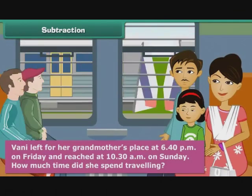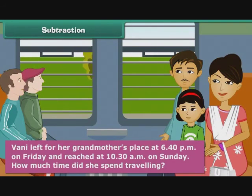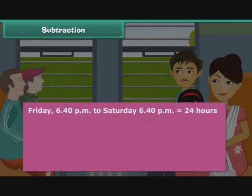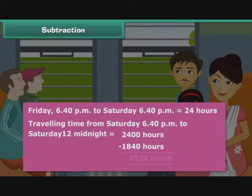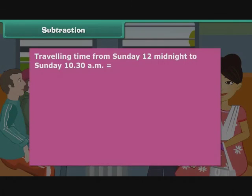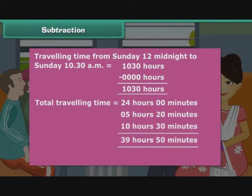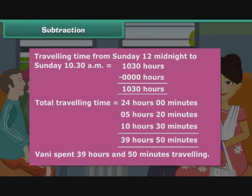Vani left for her grandmother's place at 6:40 p.m. on Friday and reached at 10:30 a.m. on Sunday. How much time did she spend travelling? Friday 6:40 p.m. to Saturday 6:40 p.m. equals 24 hours. Travelling time from Saturday 6:40 p.m. to Saturday 12 midnight equals 2400 minus 1840 hours, which is 5 hours and 20 minutes. Travelling time from Sunday 12 midnight to Sunday 10:30 a.m. is 10 hours and 30 minutes. Total travelling time is 39 hours and 50 minutes. Therefore, Vani spent 39 hours and 50 minutes travelling.